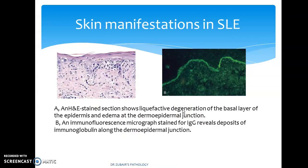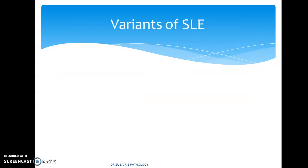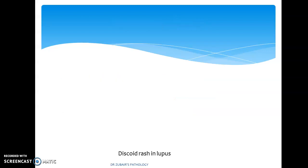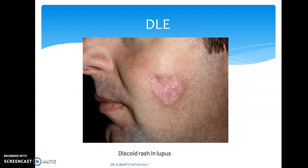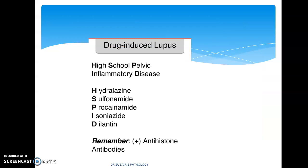The skin manifestation of SLE shows immunofluorescence at the dermal-epidermal junction — the malar rash. Libman-Sacks endocarditis can also occur. Variants include chronic discoid lupus erythematosus, subacute cutaneous lupus erythematosus, and drug-induced lupus erythematosus. Drugs that lead to lupus include hydralazine, sulphonamide, procainamide, isoniazid, and dilantin. Antihistone antibodies are commonly seen in drug-induced lupus.